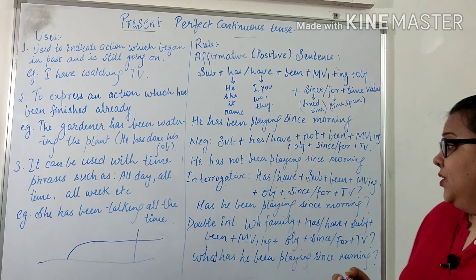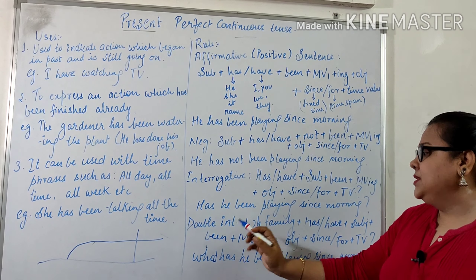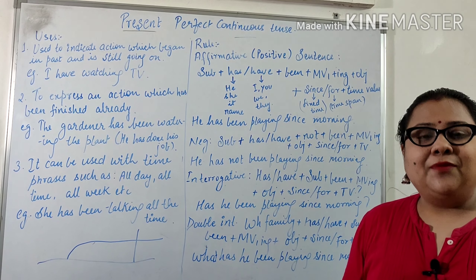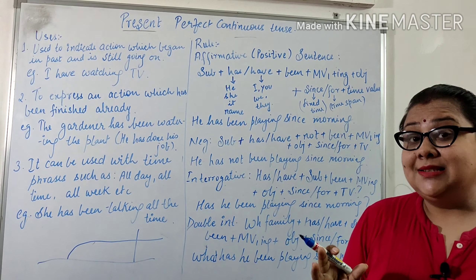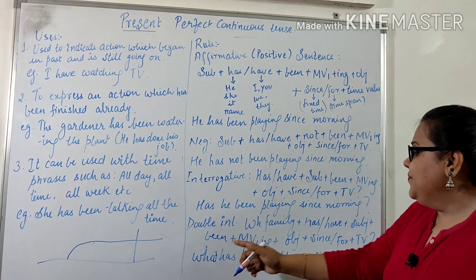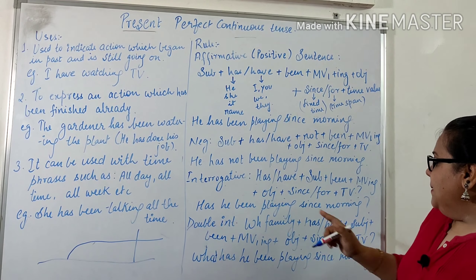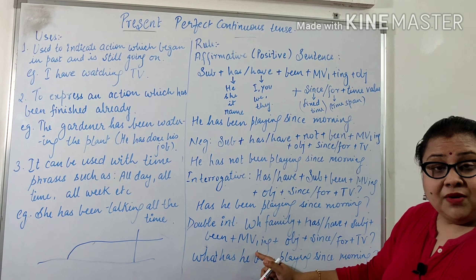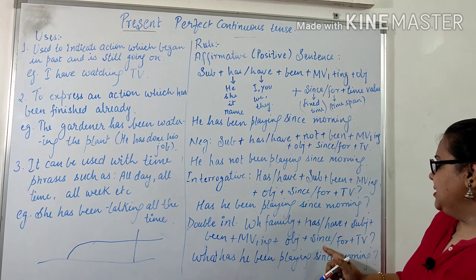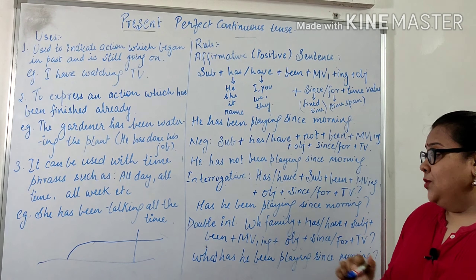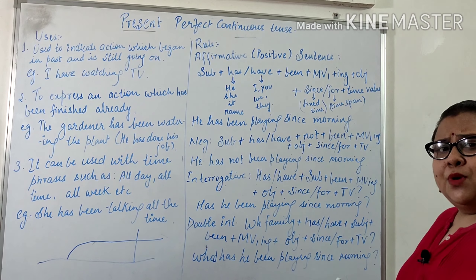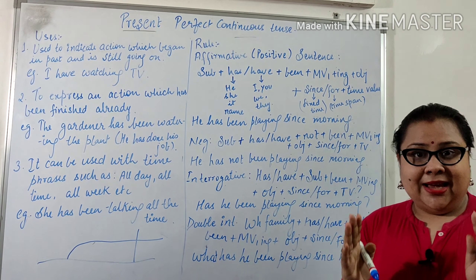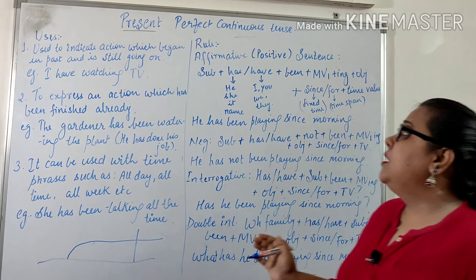For double interrogatives — the WH family — where you can't answer with yes or no, the structure is: WH word + has/have + subject + been + main verb (first form + ing) + object + since/for + time value. For example: 'What has he been playing since morning?'